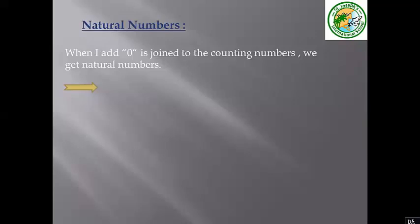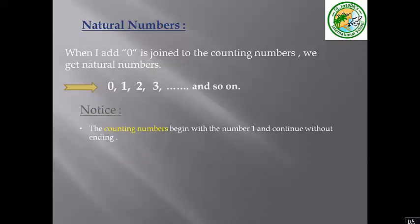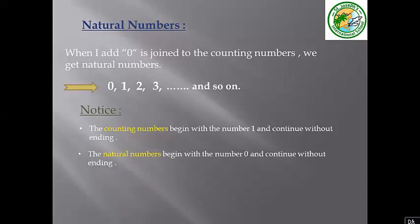Natural numbers. When I add zero to the counting numbers, we get natural numbers. Natural numbers: zero, one, two, three, and so on. The counting numbers begin with the number one and continue without ending. But the natural numbers begin with the number zero and continue without ending. The smallest natural number is zero, but the smallest counting number is one.